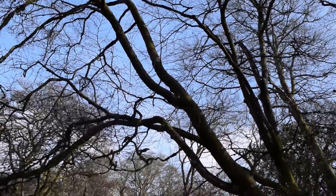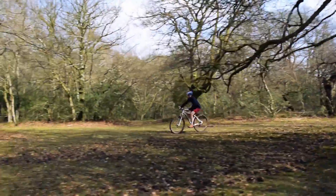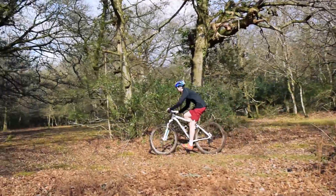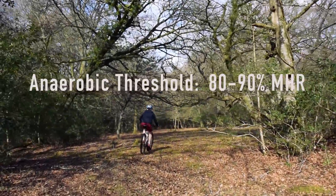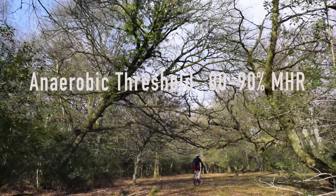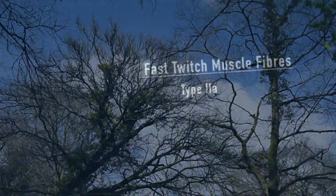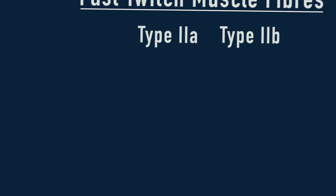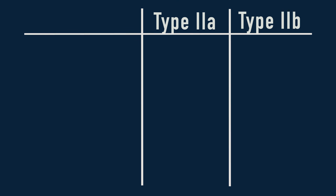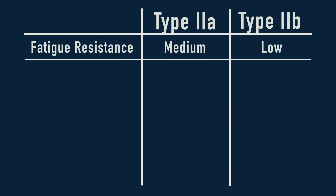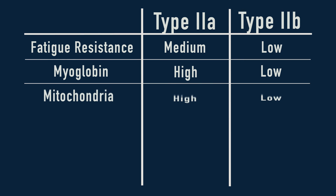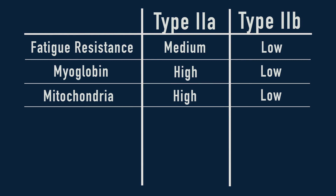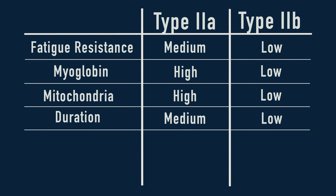This type of training increases the muscles' resistance to acid build-up by developing your anaerobic threshold, which is when the body can no longer clear acid from the muscles, usually between 80 to 90 percent of your maximum heart rate. This training is beneficial because you develop your type 2a fast twitch muscle fibres, which, unlike the type 2b muscle fibres used in the ATP-PC energy system, have a resistance against fatigue and possess large amounts of myoglobin and mitochondria, allowing them to generate more energy for a longer duration of time.